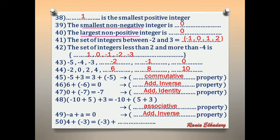Number 50: 4 plus negative 3 equals negative 3 plus what? Cancel negative 3 with negative 3. The answer is 4. This is the commutative property.